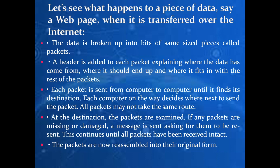Let us see what happens when we are sending data to be transferred over the internet. The first thing that happens is the data is broken up into pieces of the same size, and those are known as packets. Then a header is added to each packet explaining where the data came from, where it should end up, and where it fits with the rest of the packets. Each packet must have a header containing the source address, the destination address, and the sequence number.